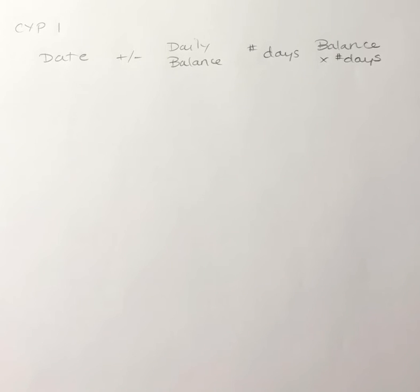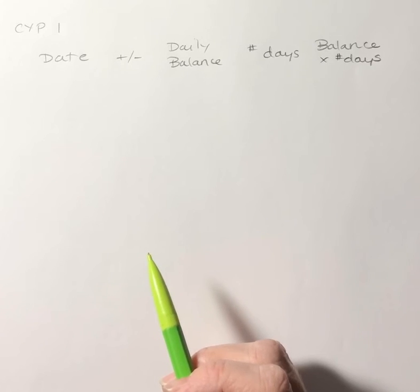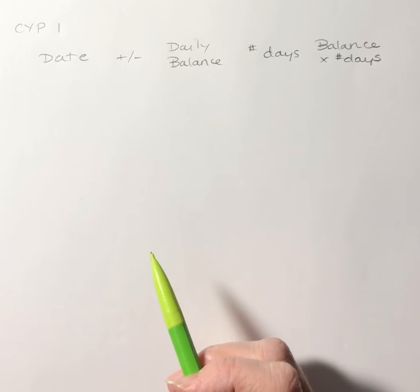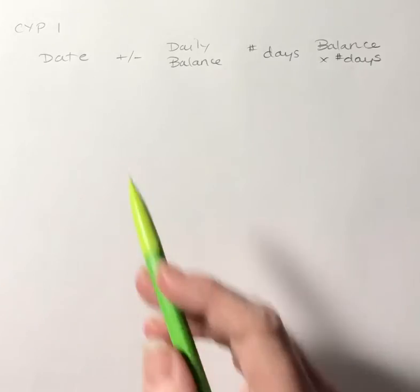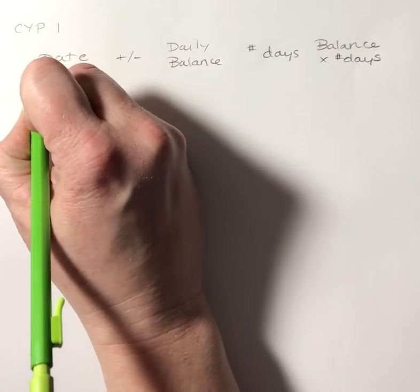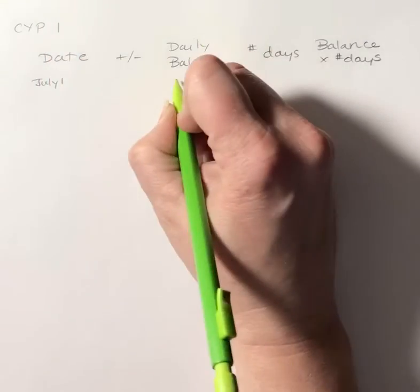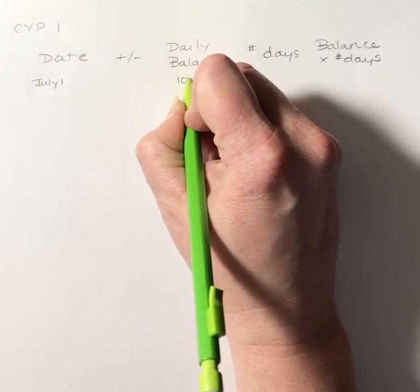This is section 11.3, check your progress one — another problem where we are finding the finance charge on a bill. A bill for $1,024 was due on July 1st, so I'm going to start with July 1st and we had a balance of $1,024.